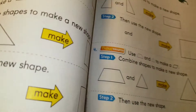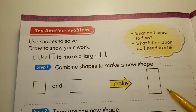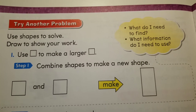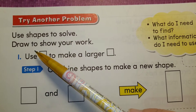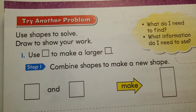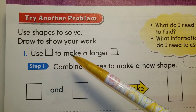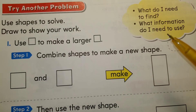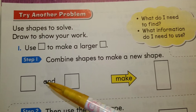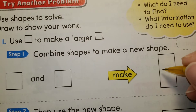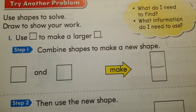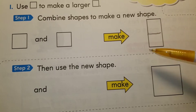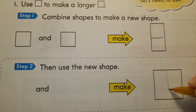Let's turn the page and take a look at number one. It says use shapes to solve and draw to show your work. It says use squares to make a larger square — combine shapes to make a new shape. We have two squares. Step one: we put the two squares together. I'm going to draw a line so you can see them. You put the two squares together and you get a rectangle. Step two: then use the new shape. If I put two rectangles together, I get a big square.